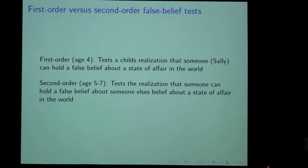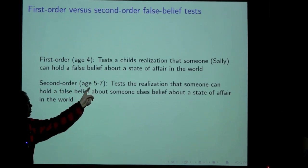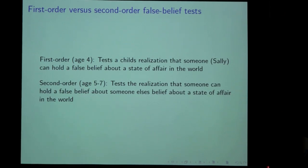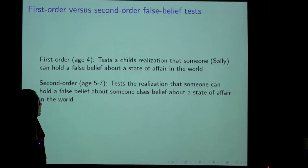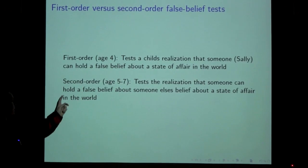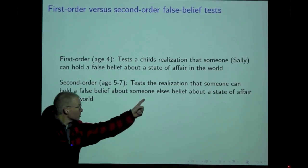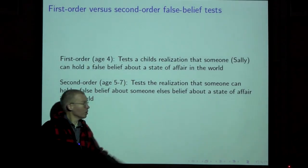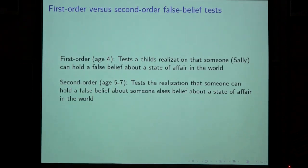One thing I've looked at recently is second-order false belief tests, which are somewhat harder. Kids usually need to be between 5 and 7 before they can solve such tests. They are testing whether a child can realize that someone else can hold a false belief about someone else's belief about a state of affairs — a bit more complicated.